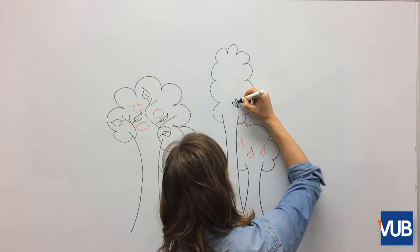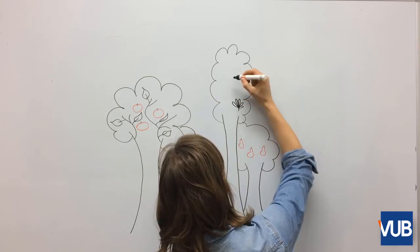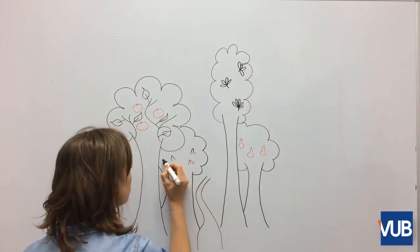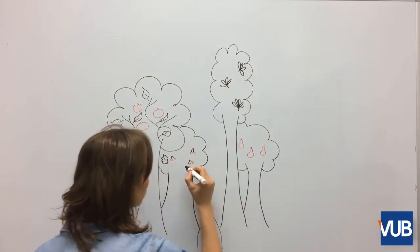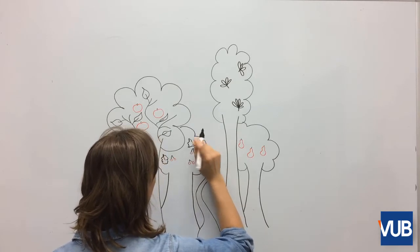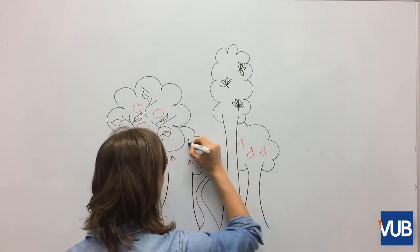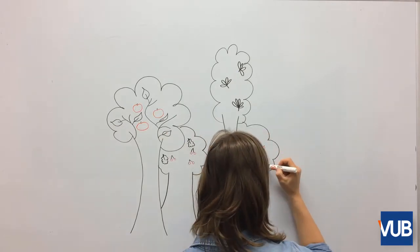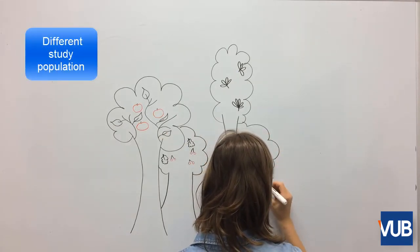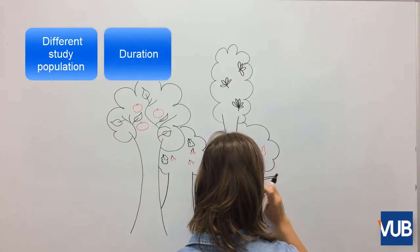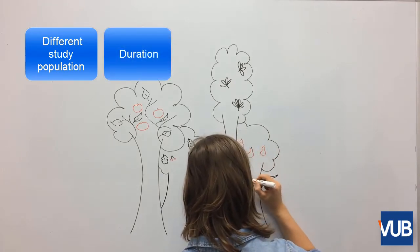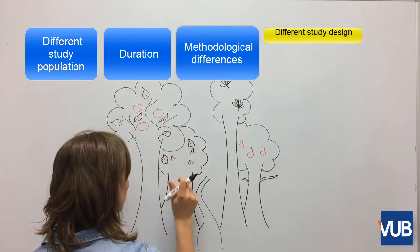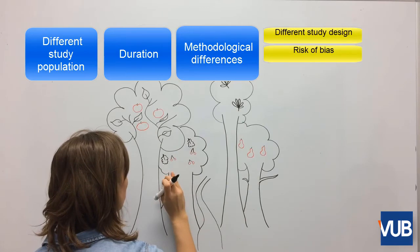When we get back to our forest, we know that not every tree has the same number of branches, the same leaf form or the same fruits. Thus, some heterogeneity exists between the trees. The same applies to the studies. Heterogeneity between studies may exist due to different study population, male or female, duration of the study, two weeks versus six months, or more methodological differences such as variability in the study design, risk of bias, etc.